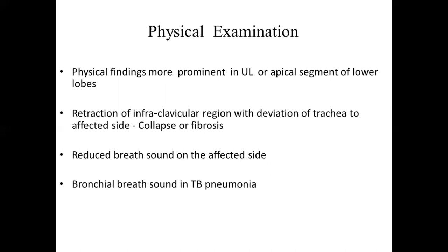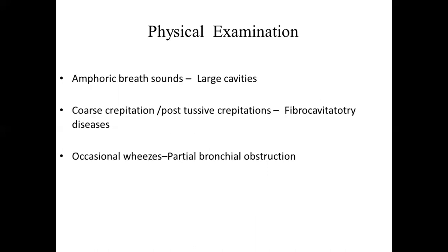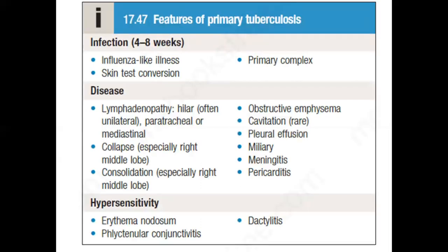You can find infraclavicular hollowing with deviation of the trachea to the affected side in cases of collapse or fibrosis, or reduced breath sounds on the affected side. Bronchial breath sounds may be present on auscultation if the patient has tubercular pneumonia. In cases of a large cavitary region, there may be amphoric breath sounds, and fibrocavitary disease can lead to coarse crepitations. In a patient with partial bronchial obstruction, occasional wheeze may be present.